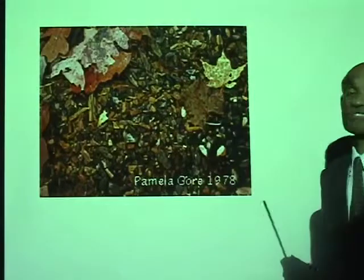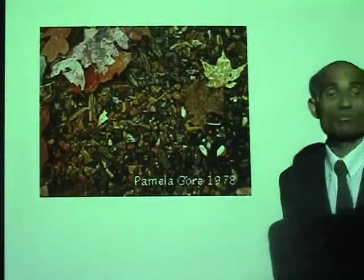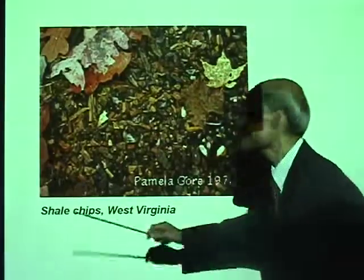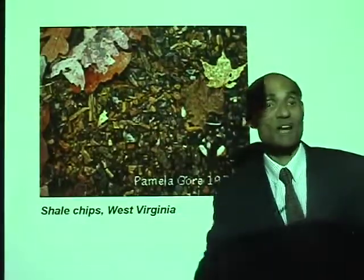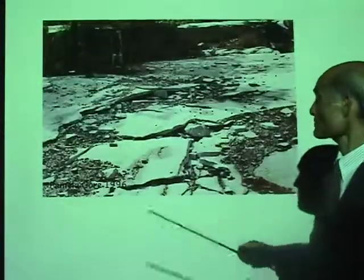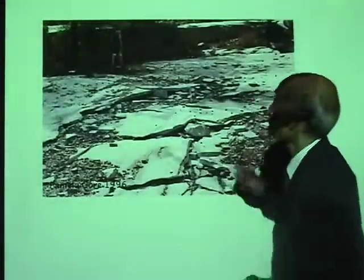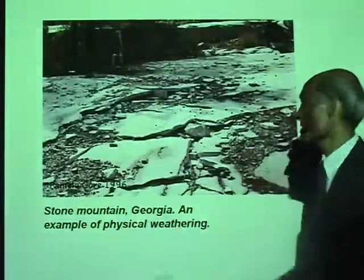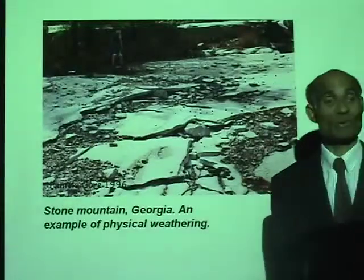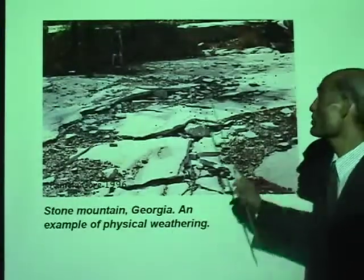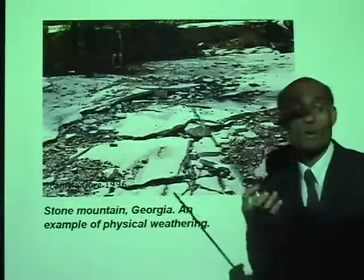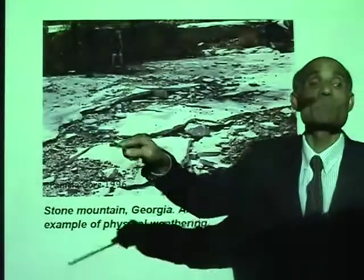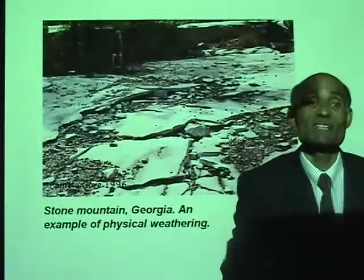Here is another process of physical weathering where rock particles are broken into pieces — these are shale chips, again in West Virginia. Look at the breaking up of the surface. This is Stone Mountain in Georgia — an example of physical weathering. Eventually all these will be broken into bits, carried away by wind and rain, and ultimately will become part of a sedimentary rock.